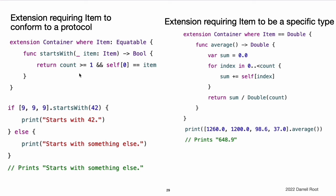You can use a generic where clause with extensions to a protocol. This example extends the container protocol from the previous examples to add a startsWith method. The startsWith method first makes sure that the container has at least one item, and then it checks whether the first item in the container matches the given item. This new startsWith method can be used with any type that conforms to the container protocol, including the stacks and arrays used above, as long as the container's items are equatable. The generic where clause in the last example requires item to conform to a protocol, but you can also write a generic where clause that requires item to be a specific type. This example adds an average method to containers whose item type is double. It iterates over the items in the container to add them up and divides by the container's count to compute the average. It explicitly converts the count from int to double to be able to do floating point division.